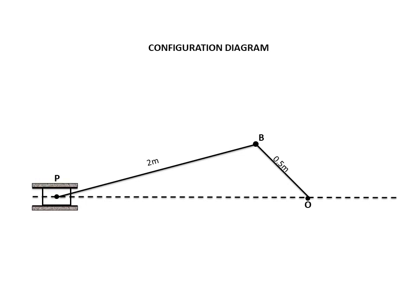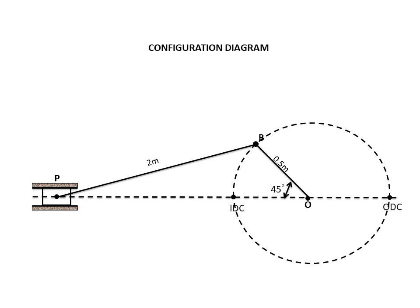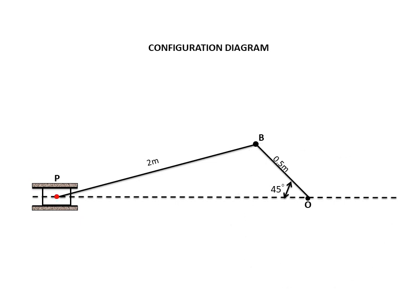Mark the angle. To understand IDC and ODC — inner dead center and outer dead center — the path traveled by point B during full crank rotation is a dotted circle. This path intersects the horizontal slider axis at two points: one on the left and one on the right. When crank point B is on the left, the piston is at its innermost (left extreme) position — that is inner dead center. On the right, the piston is at the outer extreme — outer dead center. This dotted circle and IDC/ODC labels are shown only for your understanding and need not be drawn.